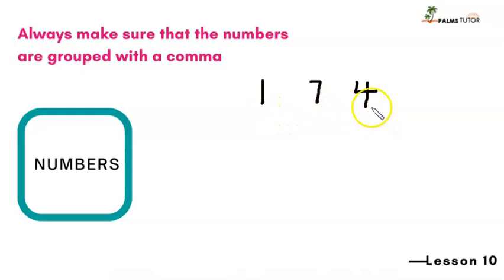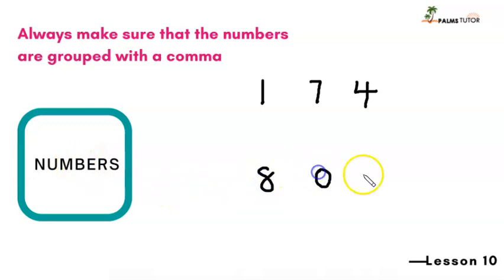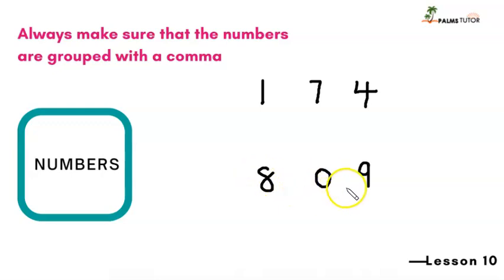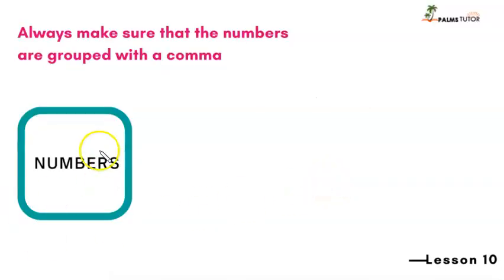So we say: one hundred and seventy-four. Let's see another one. This is 809 — eight hundred and nine — because there is nothing in the tens place. Okay, this time around we have thousands.